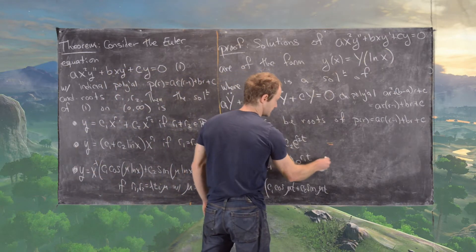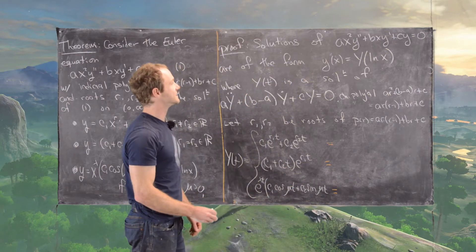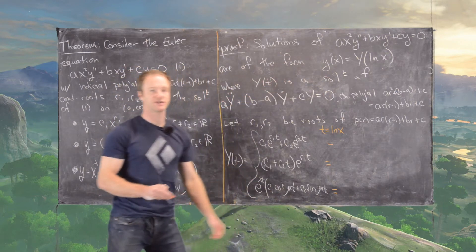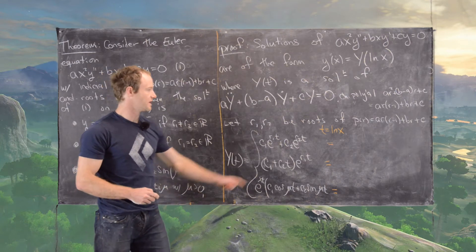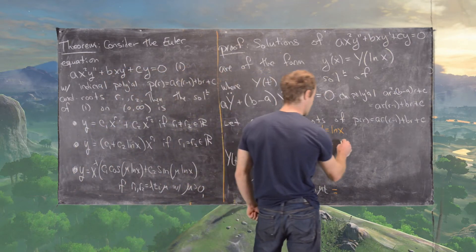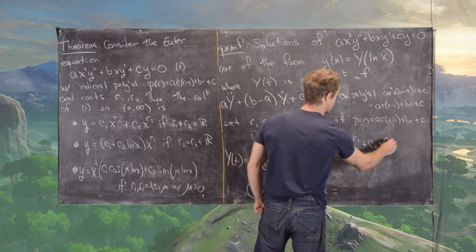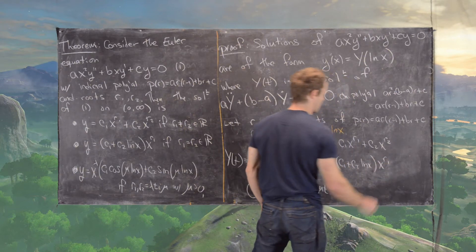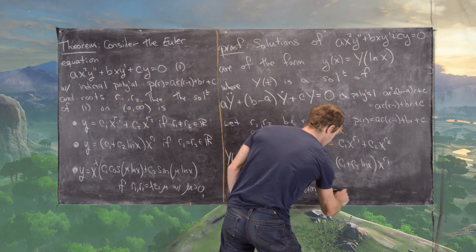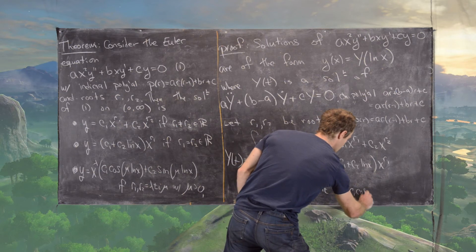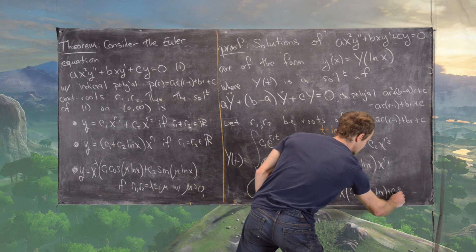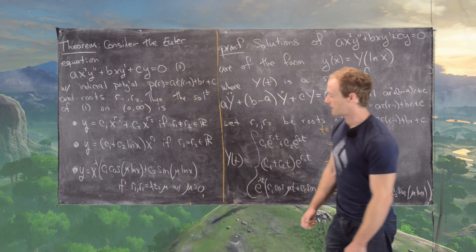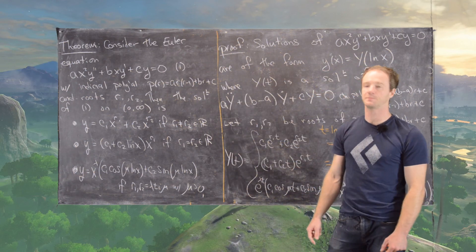Now substituting t = ln x to form our solutions to the Euler equation: for distinct real roots we get c1·x^R1 + c2·x^R2; and for complex conjugate roots we get x^λ·(c1·cos(μ ln x) + c2·sin(μ ln x)). These are exactly the solution types given in the theorem's conclusion, and so the proof is finished.